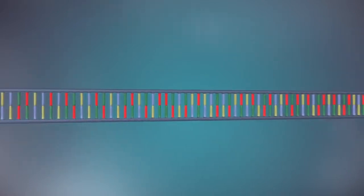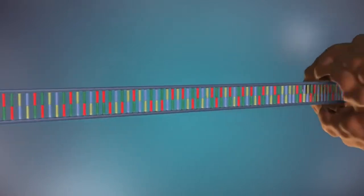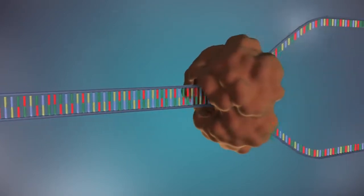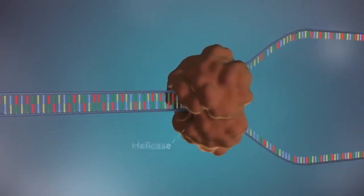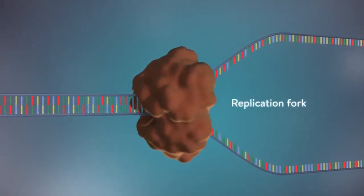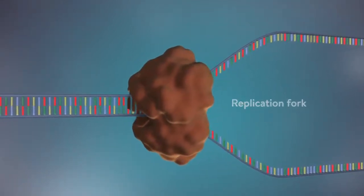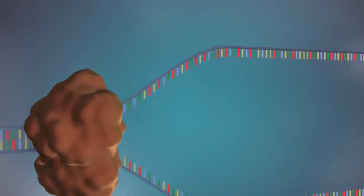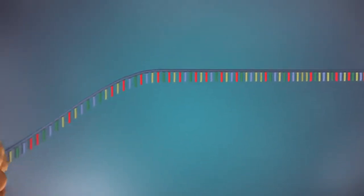The first step in DNA replication is to separate the two strands. This unzipping is done by an enzyme called helicase and results in the formation of a replication fork. The separated strands each provide a template for creating a new strand of DNA.